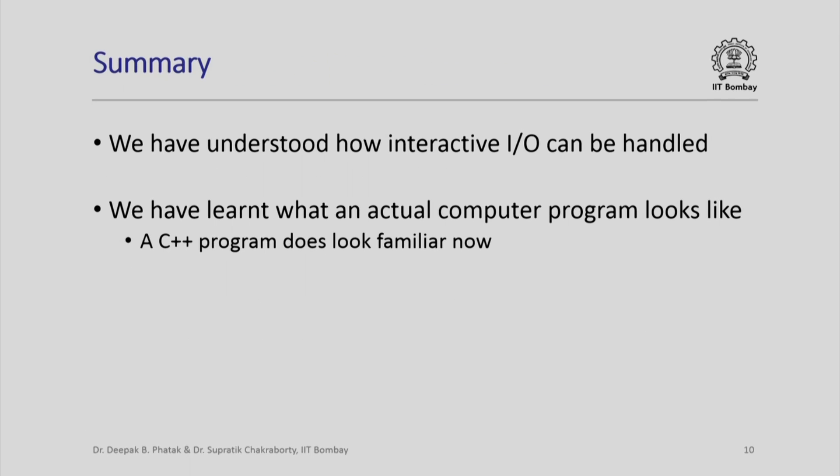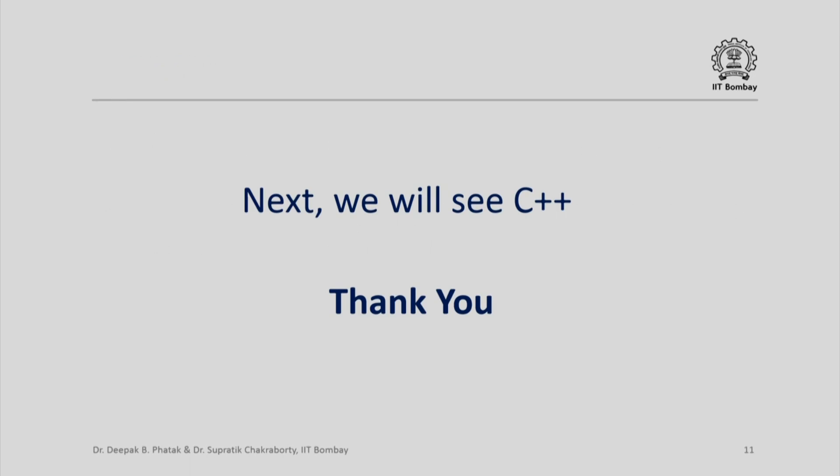In summary, we have understood how Dumbo can handle interactive input output. We have also learned what an actual computer program looks like. In fact, we noticed that a C++ program does look familiar now. With this preparation we are now ready to jump into C++, so next we shall see C++. Thank you.